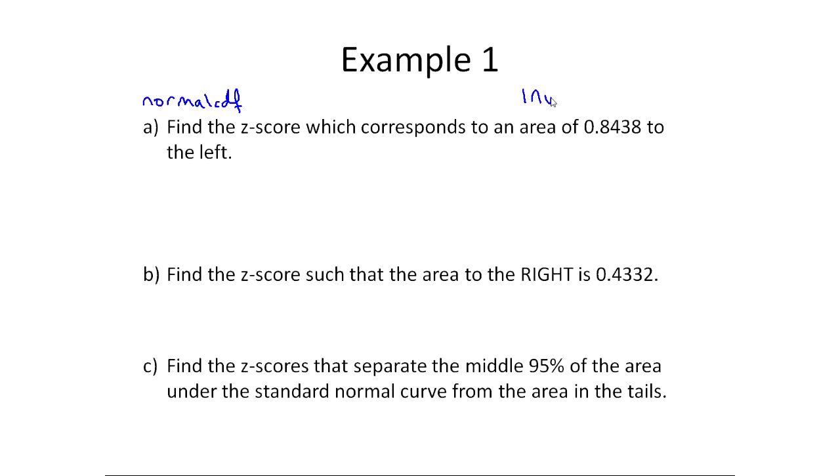but you also have the inverse normal, which takes area and gives you a z-score, or you could also look at it as taking a percentage or probability and giving you a z-score or even a value depending on what type of problem you're doing.